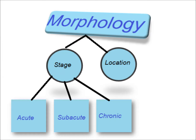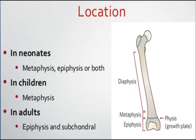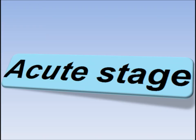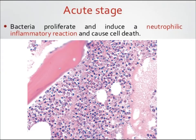Morphologically, it depends upon the stage and location of the osteomyelitis. In neonates, the metaphysis and epiphysis are involved. In children, the metaphysis is affected, and in adults, the epiphysis and subchondral location are important.